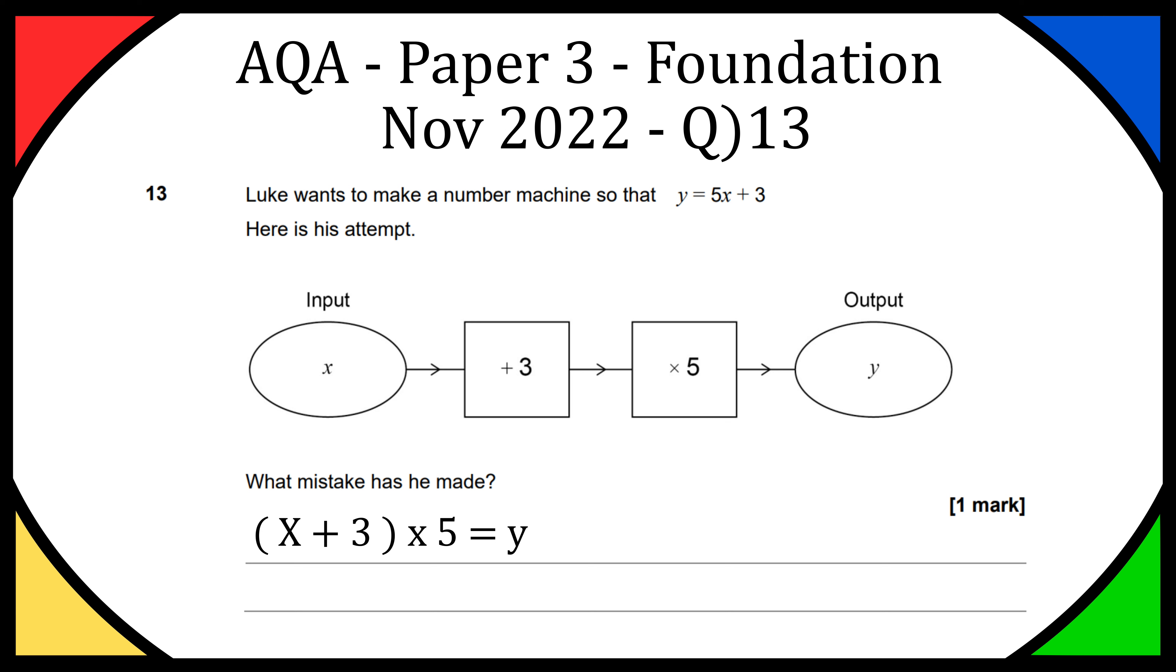He's basically done it in the wrong order or back to front. He should have times the original input of x by 5 and then added 3, but he added 3 and then times by 5.